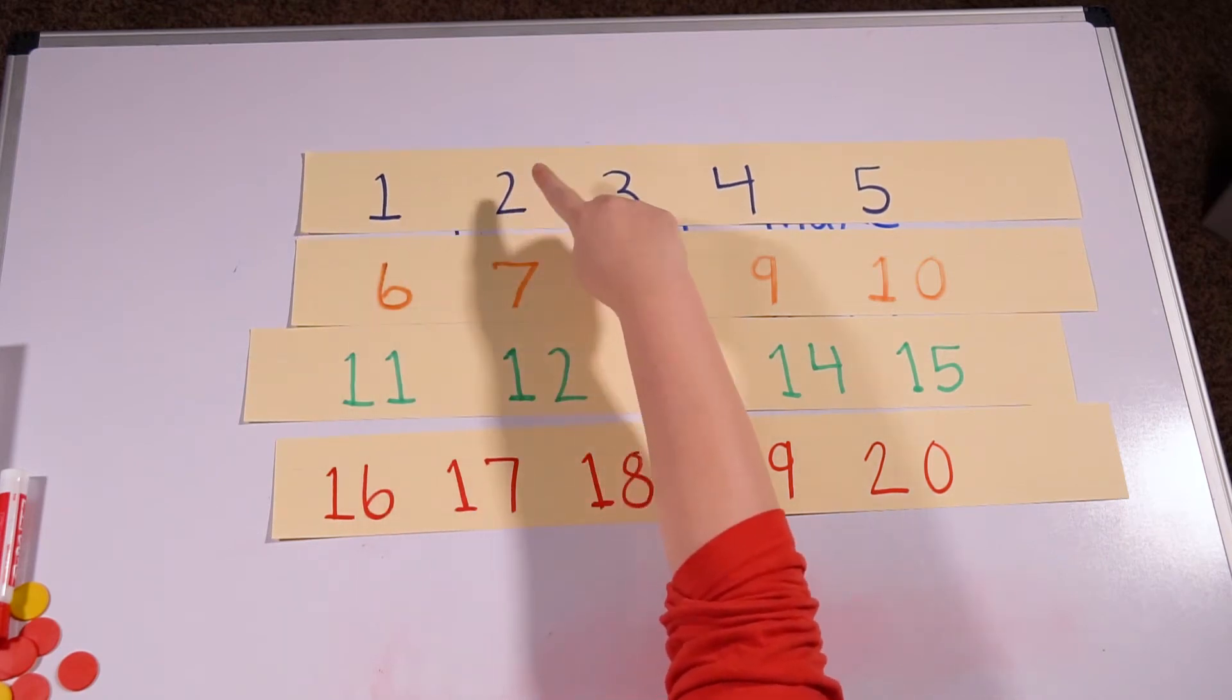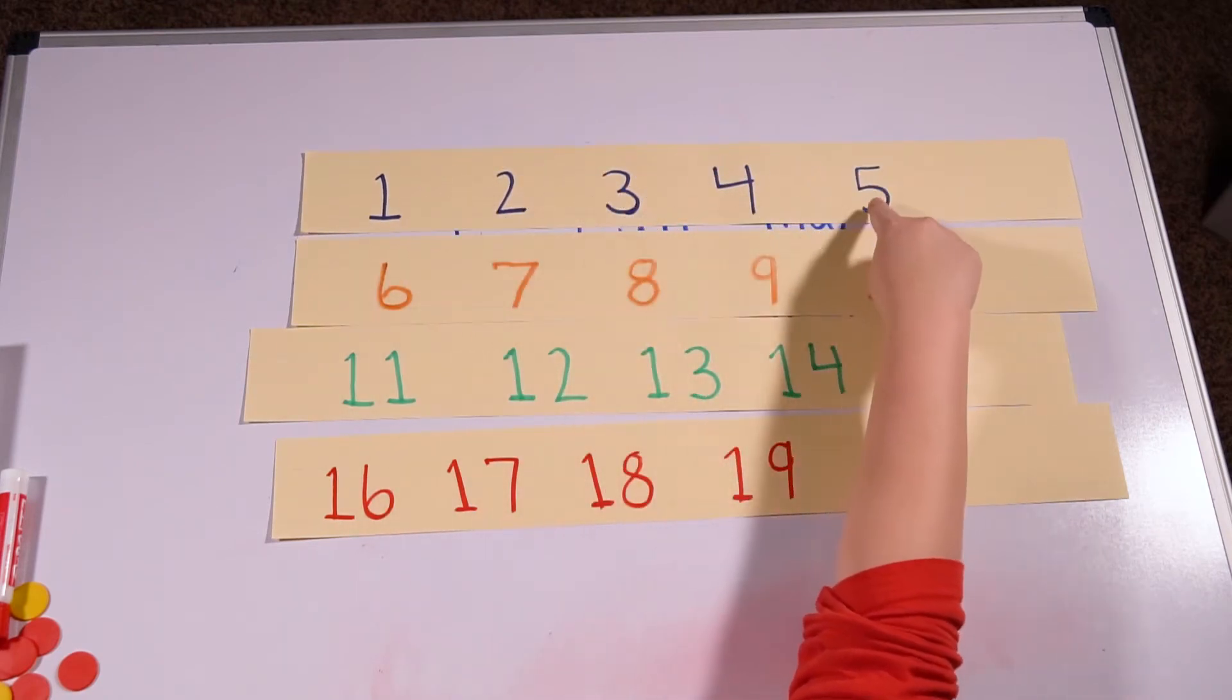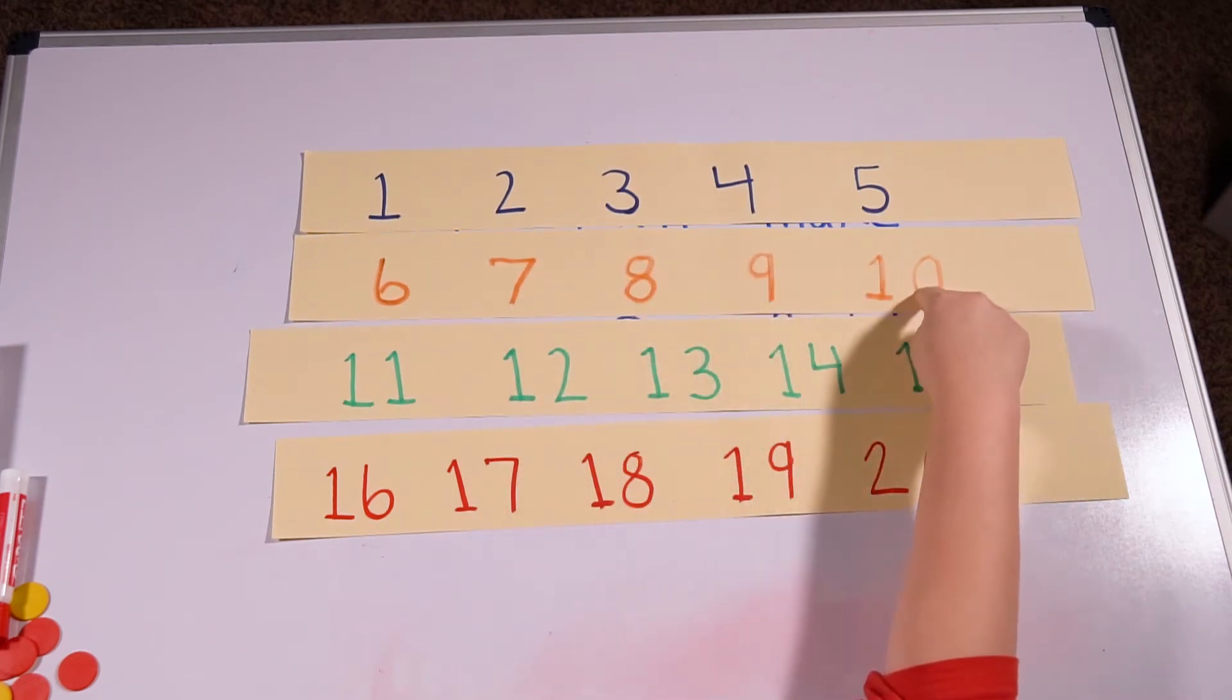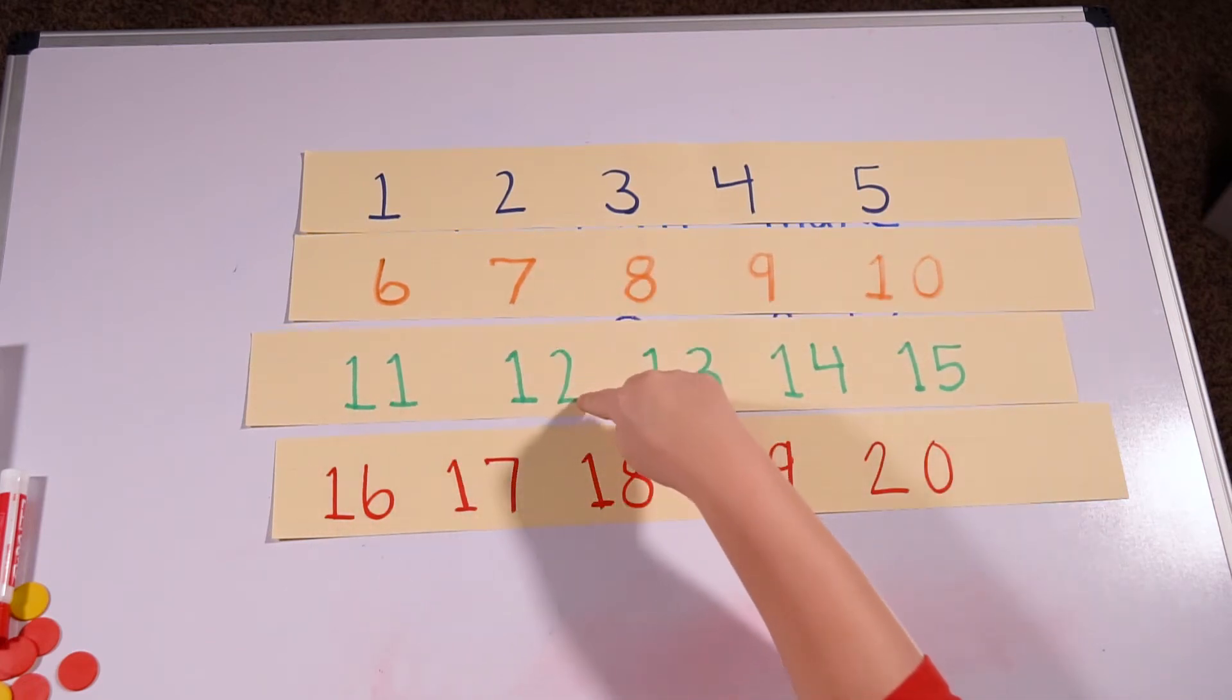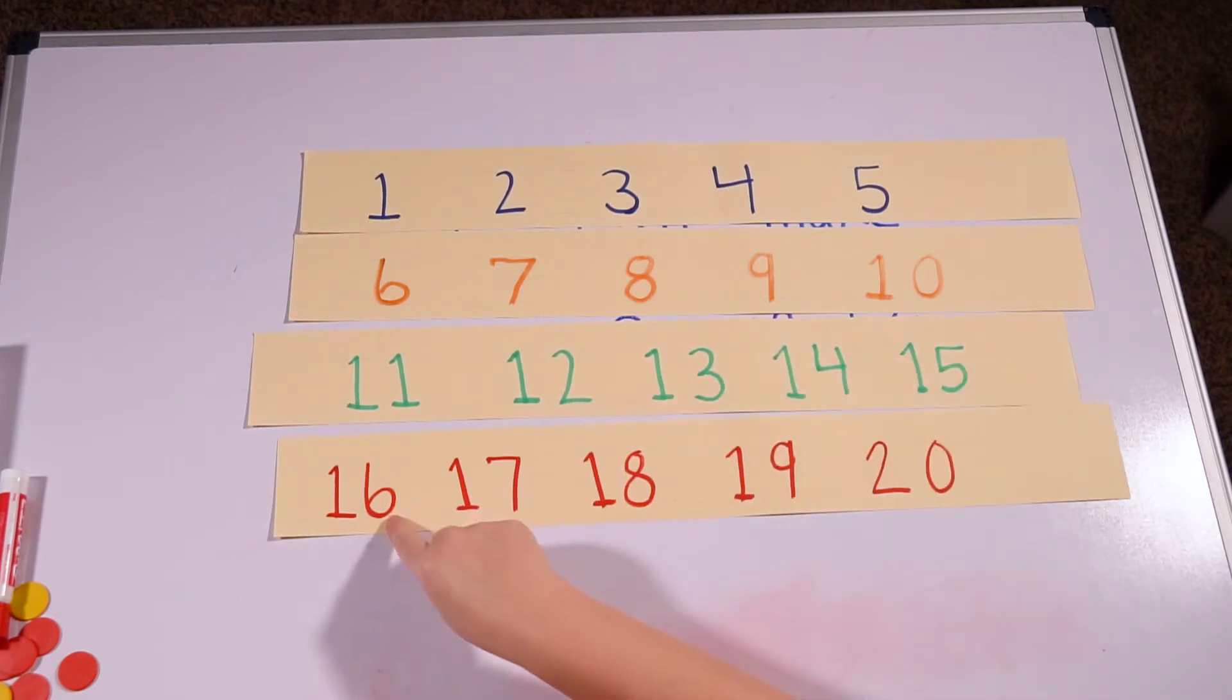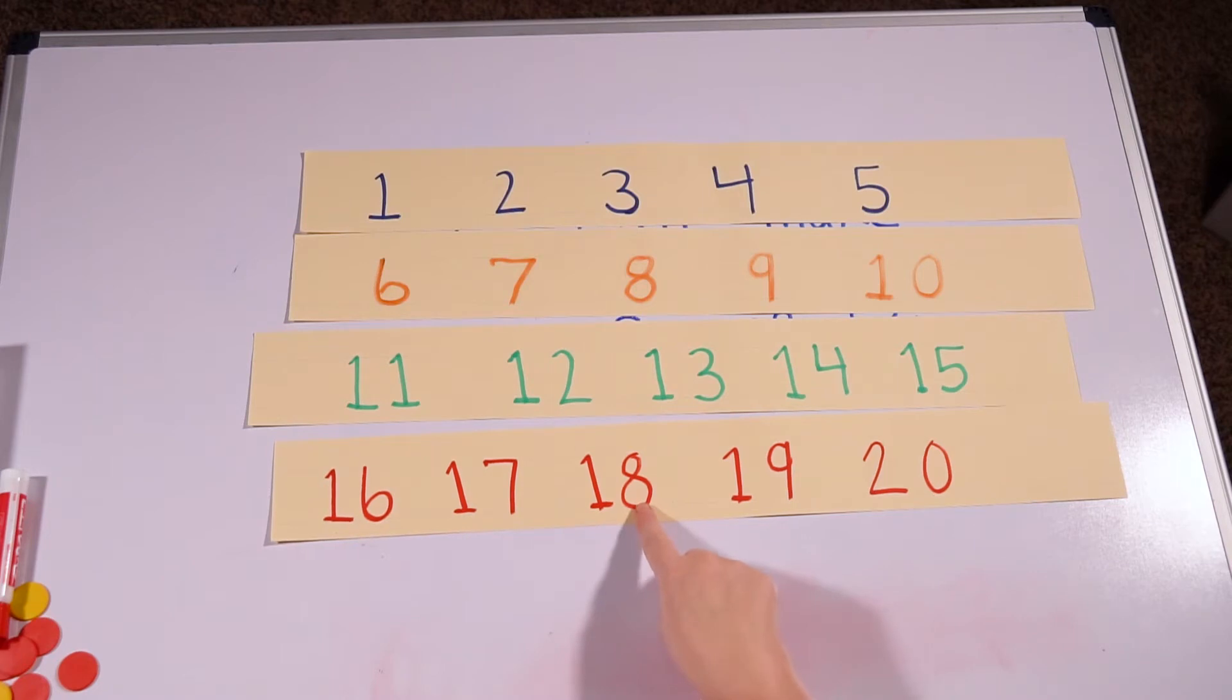One, two, three, four, five, six, seven, eight, nine, 10, 11, 12, 13, 14, 15, 16, 17, 18, 19, 20. Very good.